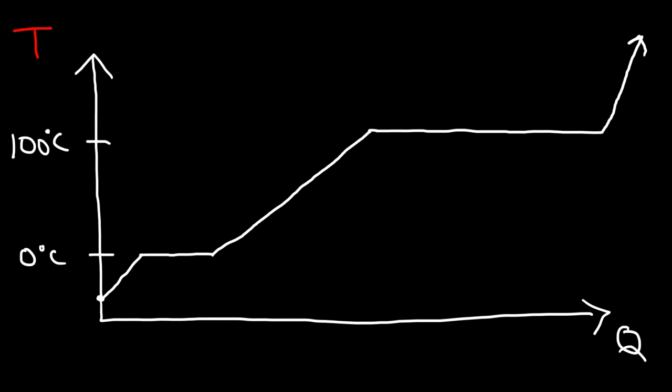There are five segments of interest in the heating curve. In the first segment we're heating ice. The energy required to heat ice can be found using Q equals mc delta T. In segment one you're raising the temperature of the ice, so as you add heat energy you're increasing the kinetic energy of the molecules — the ice molecules are vibrating with more kinetic energy.